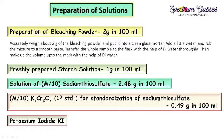For preparation of the bleaching powder solution: accurately weigh 2 grams of bleaching powder in a clean glass mortar and pestle, add a small amount of deionized water, and make a smooth paste. Transfer that smooth paste to a 100 ml measuring flask with deionized water, making sure all the bleaching powder paste is transferred completely. Then make up the solution to the 100 ml mark with deionized water.